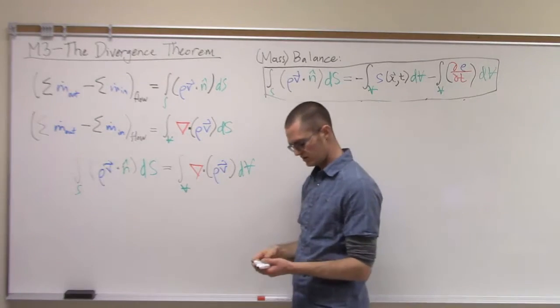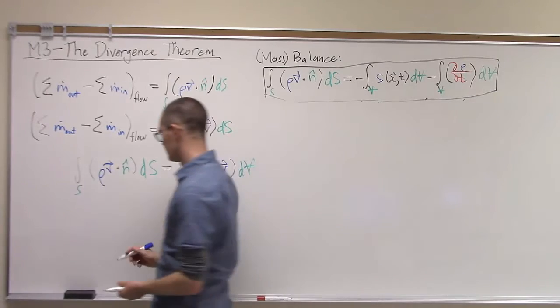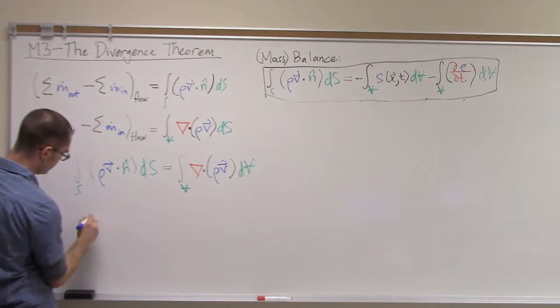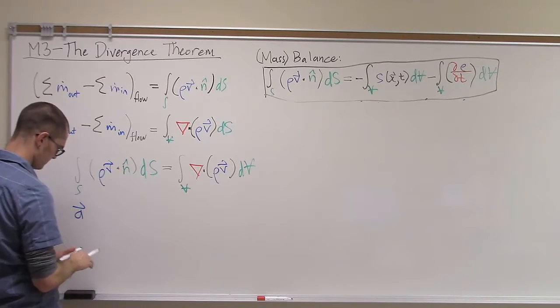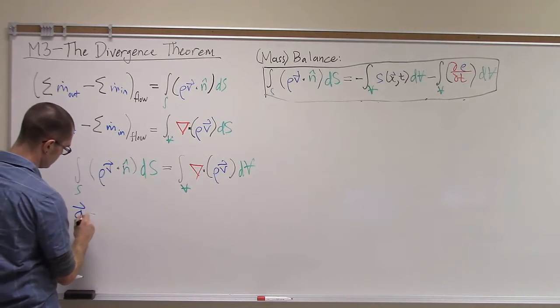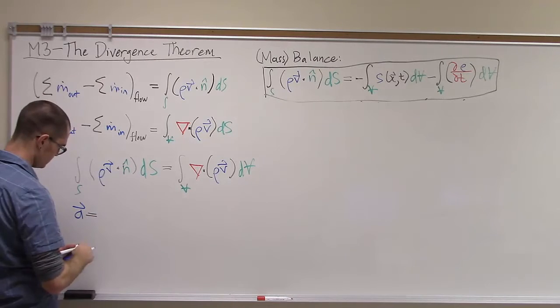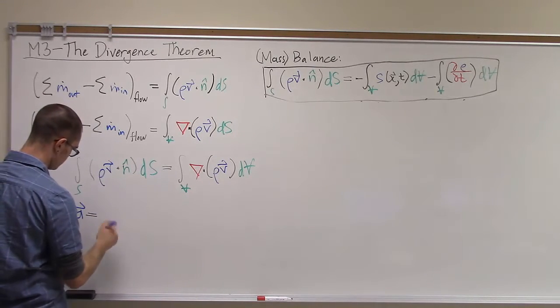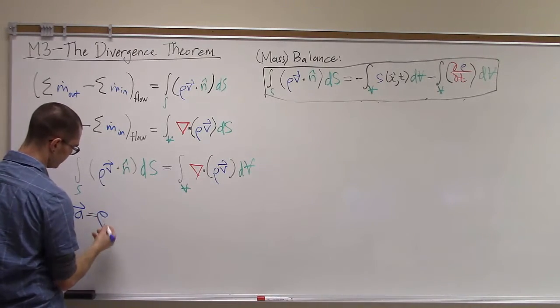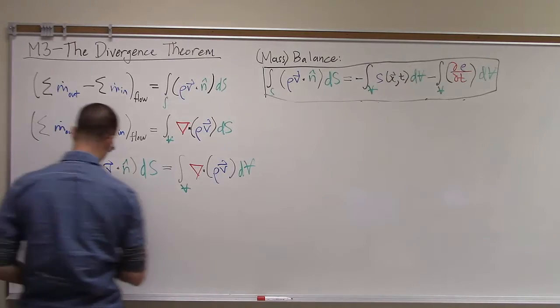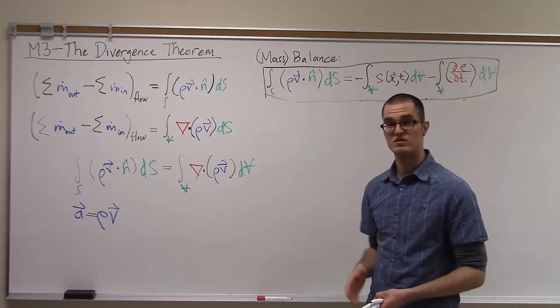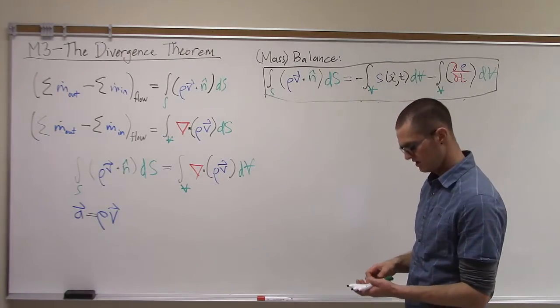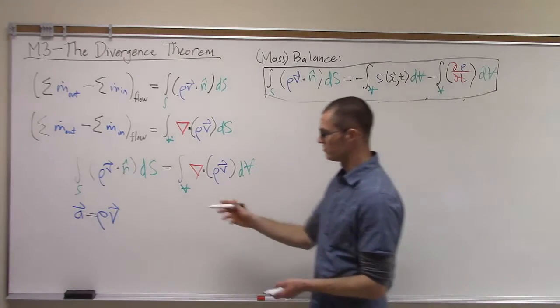But taking these two together, we could define a flux field A as this scalar concentration times the velocity. So in general, our flux field could just be some vector field A, and that allows us to write a more general expression.